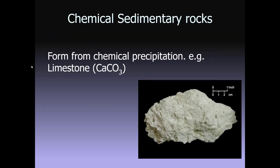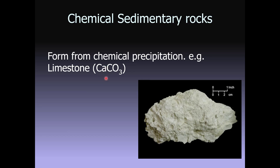Chemical precipitation might not seem as obvious, but it's particularly important for us in Florida because our whole state is made from chemical sedimentary rock, in particular limestone. You've got calcium and carbonate — a combination of carbon and oxygen — dissolved in the water, and then some change in condition. In the case of limestone, you heat the water, and that calcium and carbonate come together to make limestone. This is called a chemical sedimentary rock.